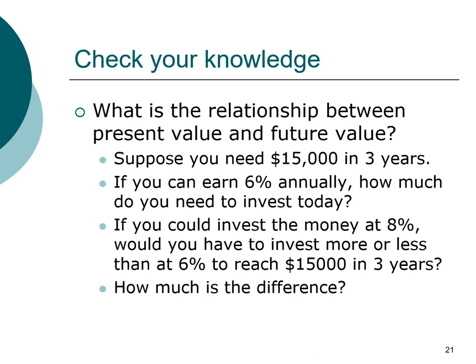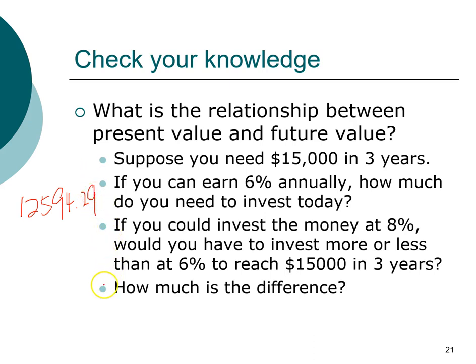Let's do one more practice. Take out your calculator and work out the problems. The answer to the first problem is $12,594.29. The answer to the second question is $11,907.48. The difference between the two is $686.81. Congratulations — you have mastered present value!